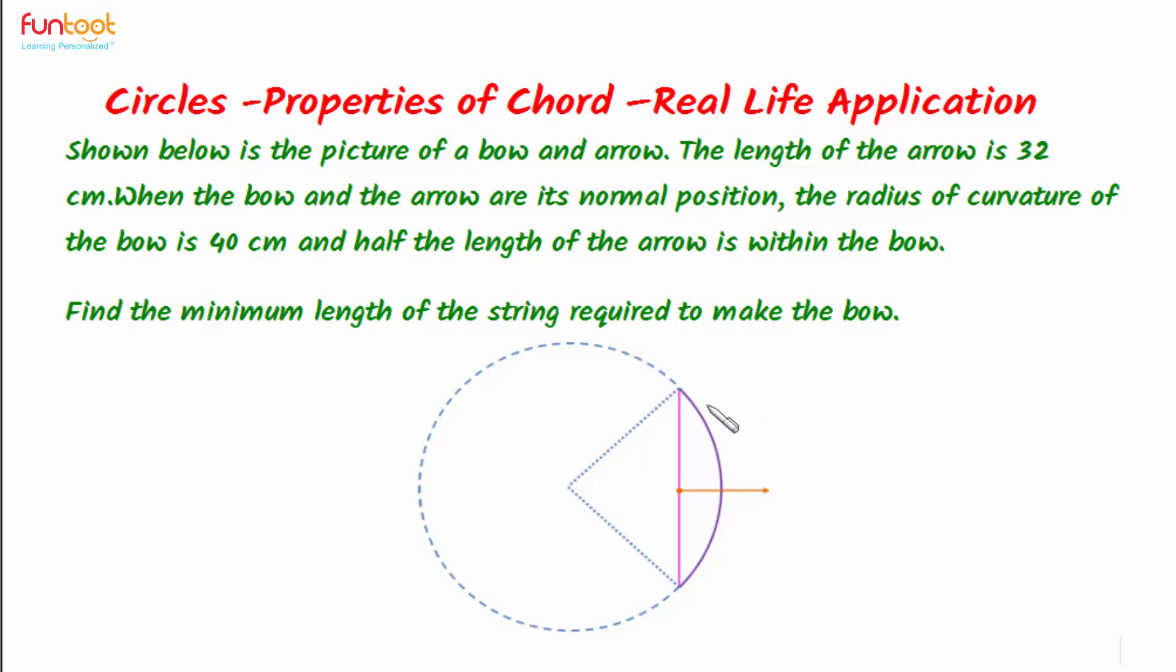Let's do a problem. In this problem we have a bow and arrow. The bow forms part of a circle. The radius of curvature of this circle is 40 centimeters. The length of the arrow is 32 centimeters, and in normal position when the bow is not stretched, half of the arrow is inside the circle. That means the length of this portion is 16 centimeters.